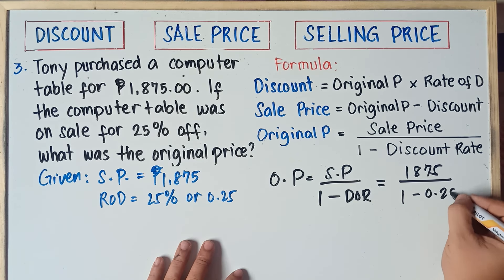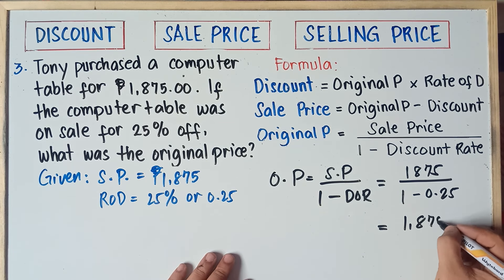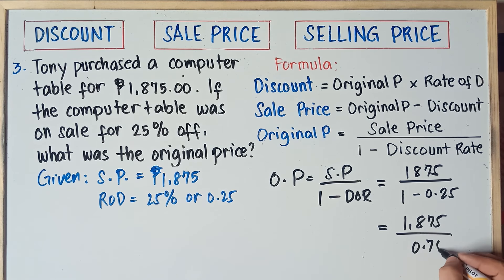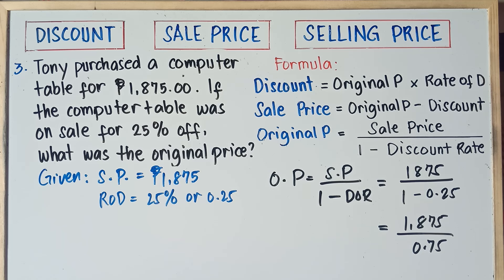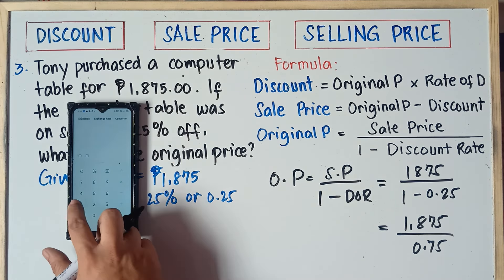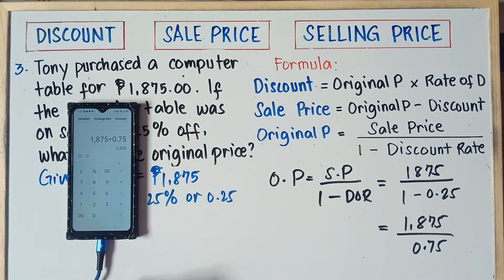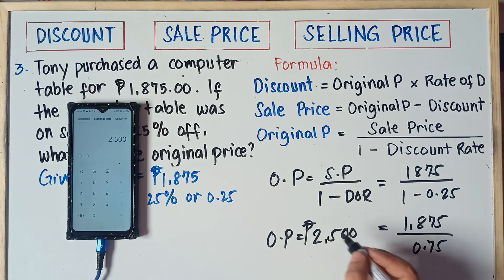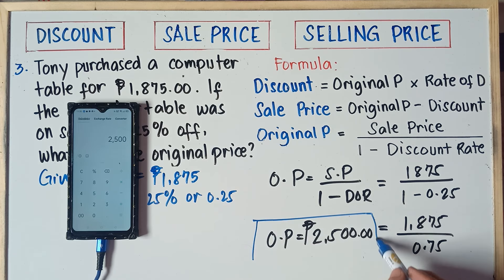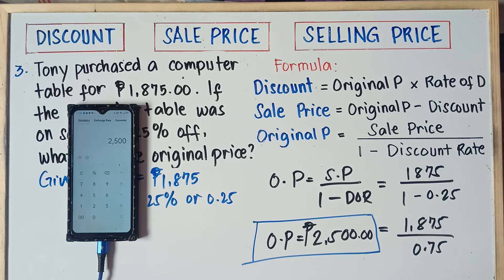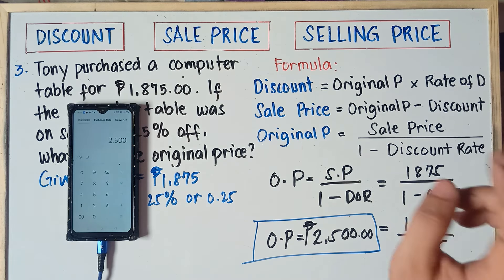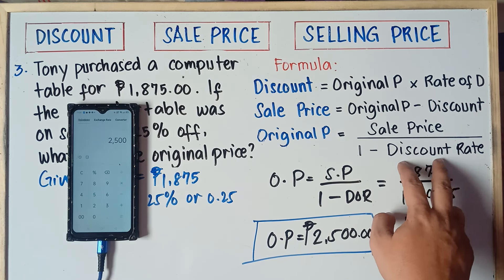Using the formula: Original Price = Sale Price ÷ (1 − Discount Rate). So that is 1,875 ÷ (1 − 0.25) = 1,875 ÷ 0.75. Using the calculator, 1,875 divided by 0.75 equals 2,500 pesos. The original price is 2,500 pesos. Just use this formula when you are looking for the original price: Sale Price divided by (1 minus the discount rate).